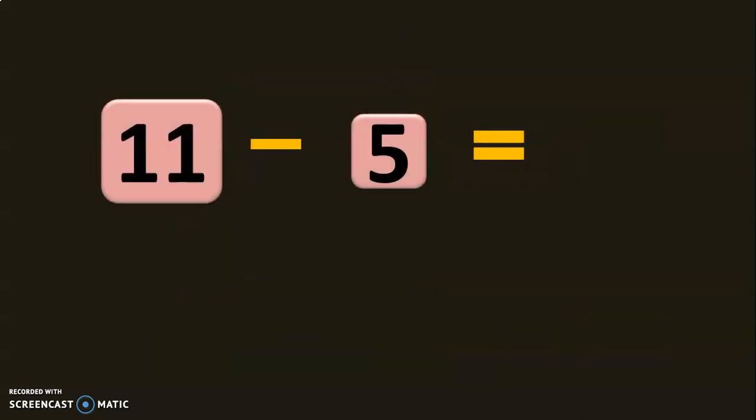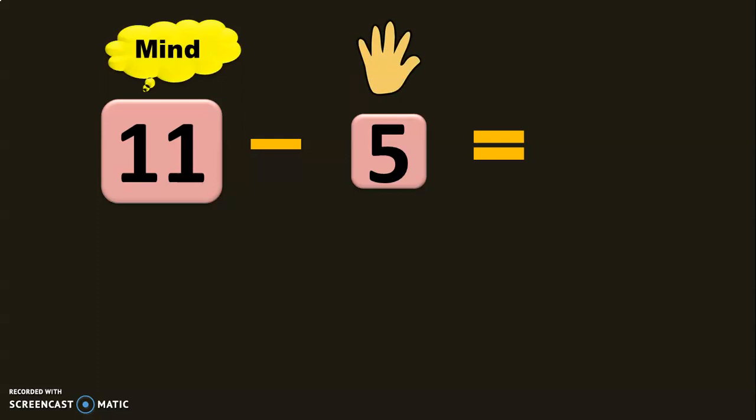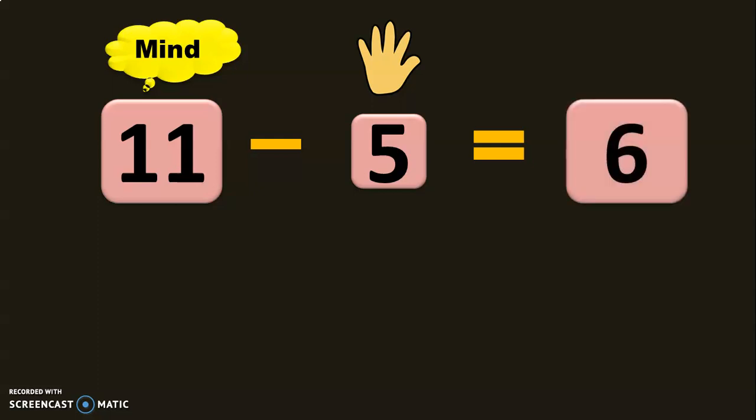Let us do the next sum: 11 minus 5. 11 in the mind, 5 in the fingers. Before 11: 10, 9, 8, 7, 6. The answer is 6.